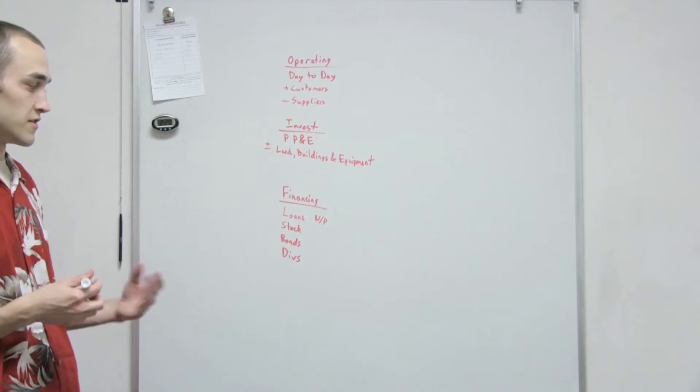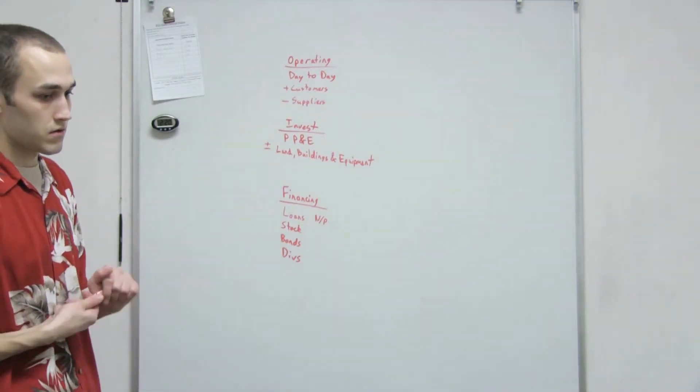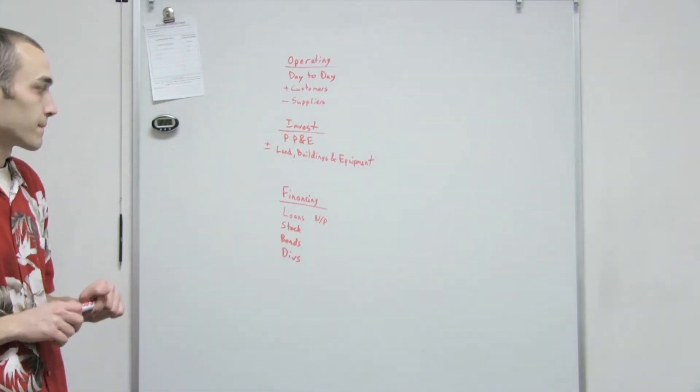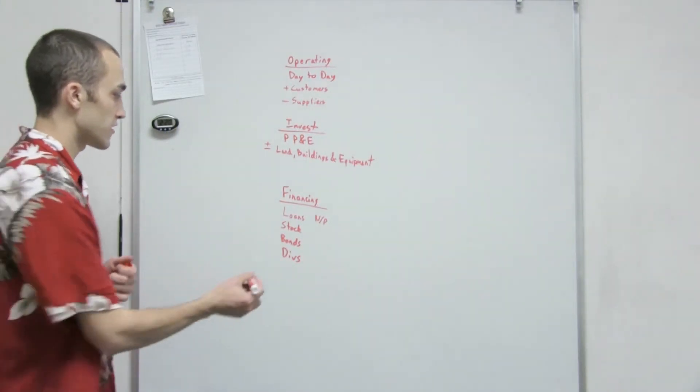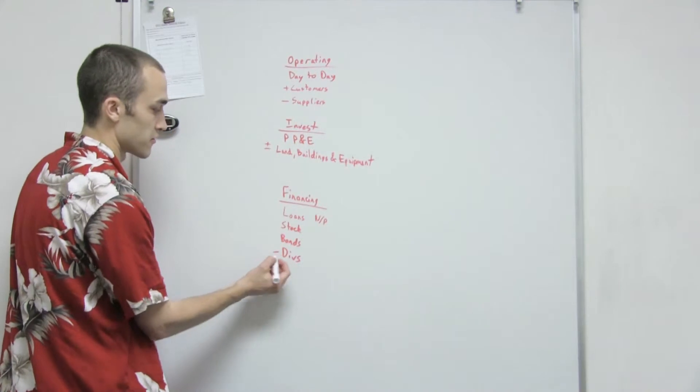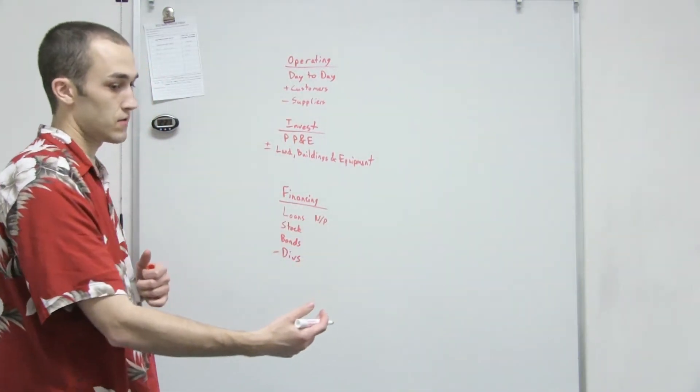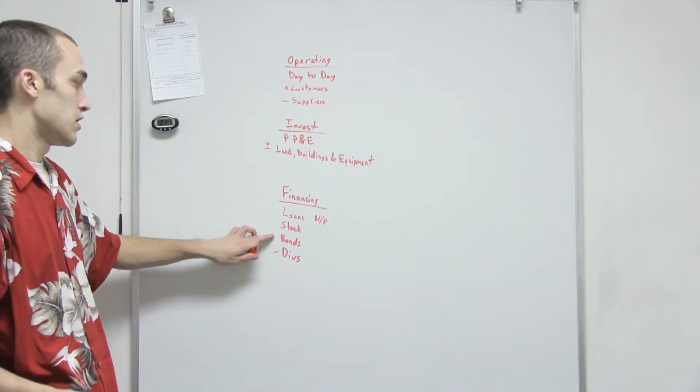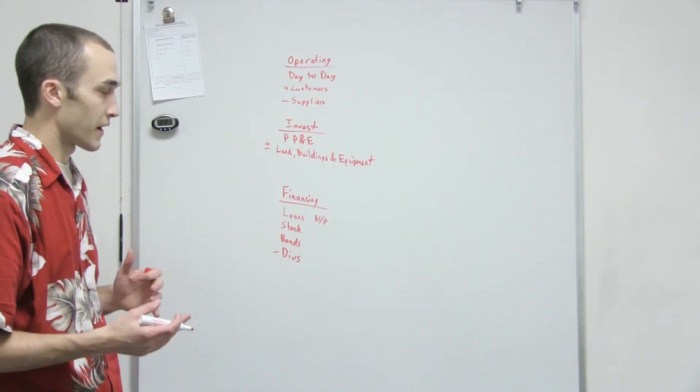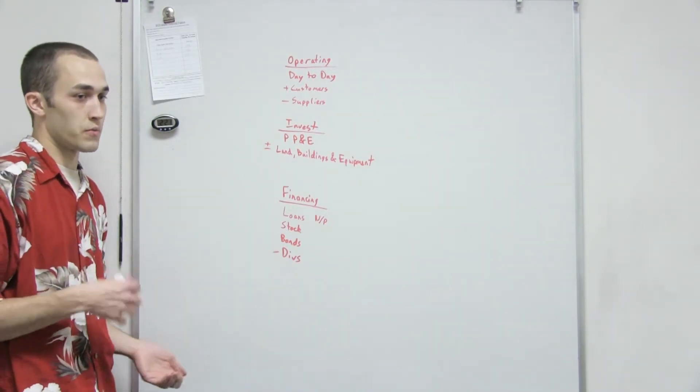There are a couple other ways that you can get money, but these are the main ones we're going to be talking about in this chapter and the rest of the semester. Dividends are always going to be a negative because you're the one paying the dividends out. Whereas the loans, stock, and bonds can be plus or minus whether you're taking out a loan or paying off your loan.